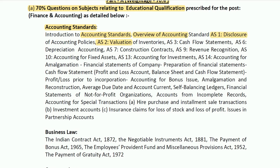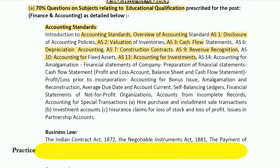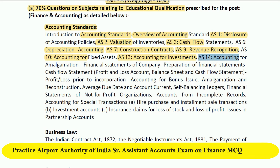Further accounting standard topics include AS2 valuation of inventory, AS3 cash flow statement, AS6 depreciation accounting, AS7 construction contract, AS9 revenue recognition, AS10 fixed assets, AS13 accounting for investments, and AS14 accounting for amalgamation.